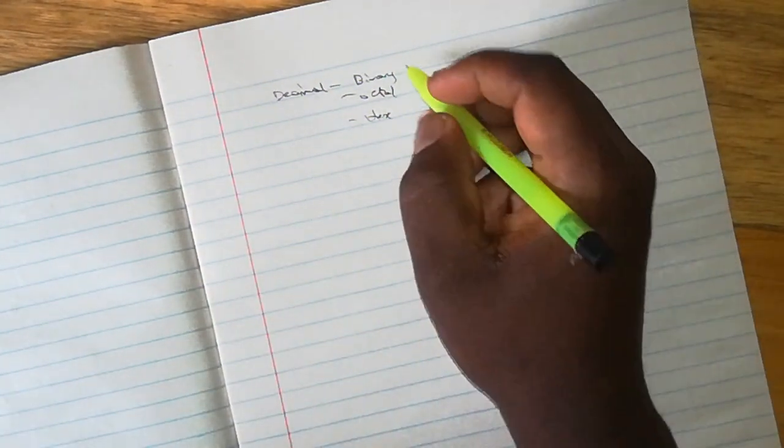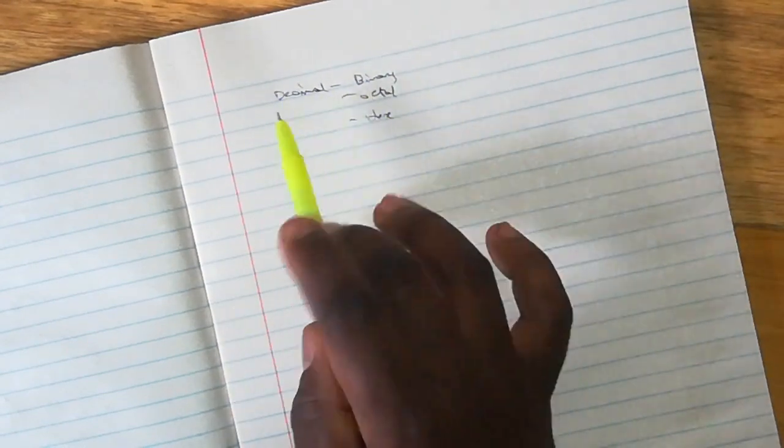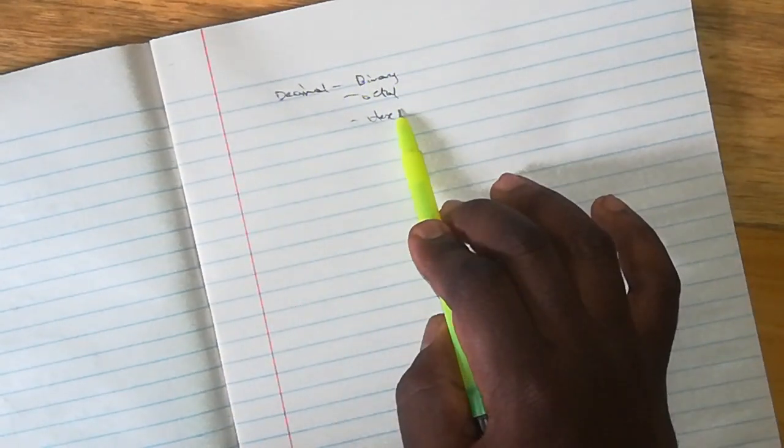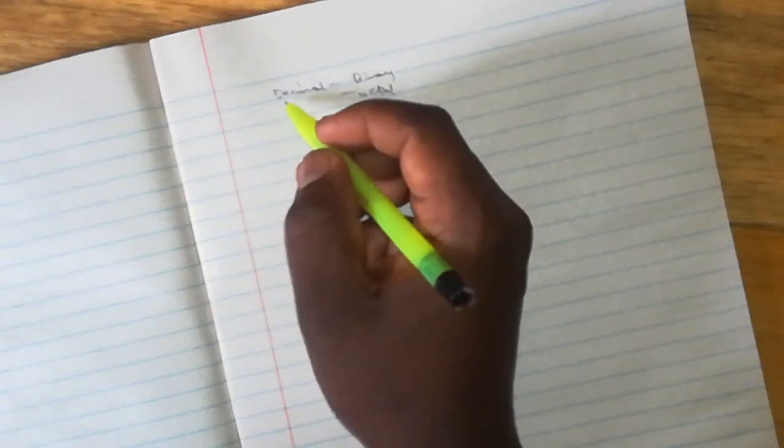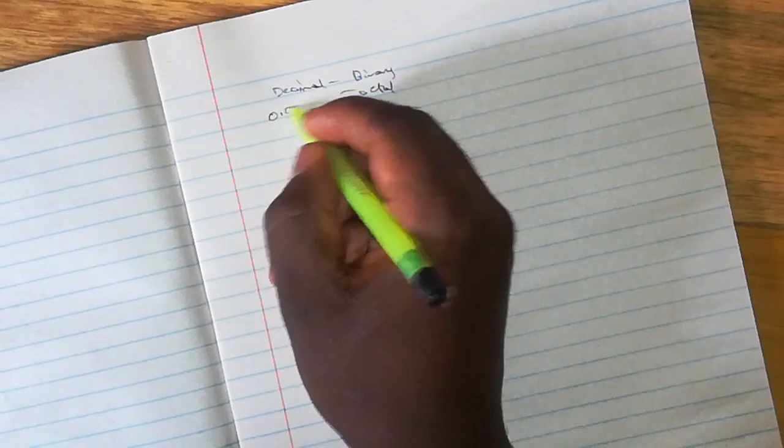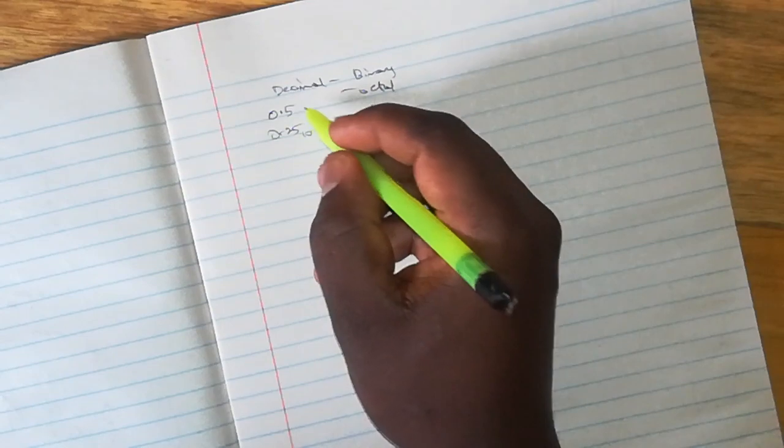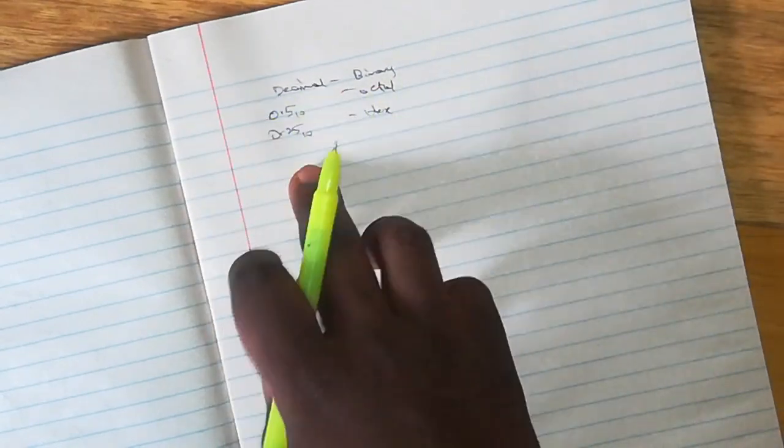In this video we are continuing with that class to look at how you do the same conversions from decimal to these three, but now where you have a decimal number that is a fraction. For example, 0.5 is a fraction, that is a half. 0.25 is a quarter. We are going to be looking at how you can convert the fractions from decimal to binary, octal, and hexadecimal.